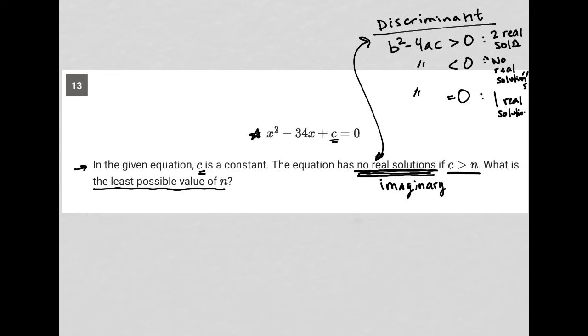Obviously, the one we care about is the second one, where it's less than 0, because we want no real solutions. So I'm going to write this down again. b squared minus 4ac is less than 0. Given the equation that I have, a is 1, because that's the coefficient in front of the x squared. b is negative 34. c is itself. So let's start plugging things in. b squared would be negative 34 squared minus 4 times a, which is 1 times c, must be less than 0.